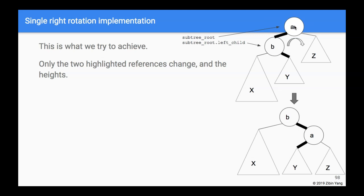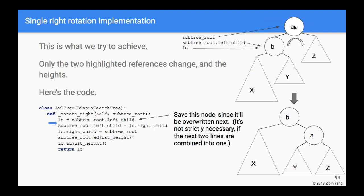With that in mind, here is the code. We call it `rotate_right`, and it's given the subtree root — node A. I save the subtree root's left child into a variable called `lc`. You don't necessarily have to do this, but it makes the code clearer and saves some typing.